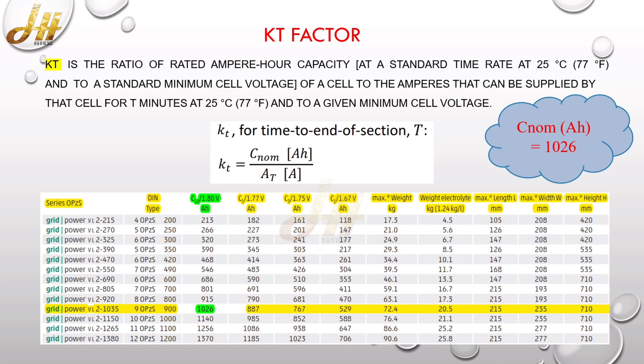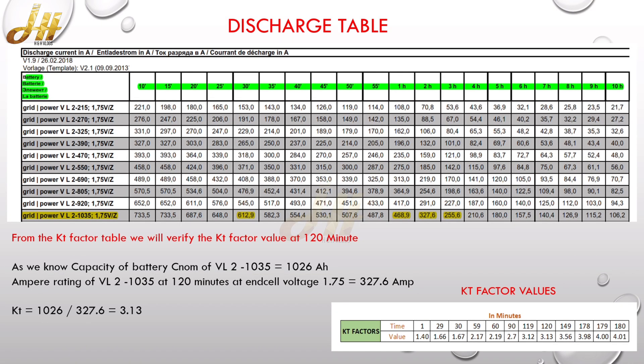So for the further calculation, we will use 1026 as the normal capacity of the battery. Now to calculate the KT value, we need to have the value of the ampere that can be supplied by that cell for 10 minutes. So this can be derived from the discharge table which the manufacturer provides.